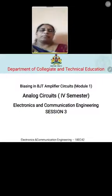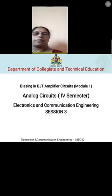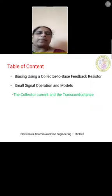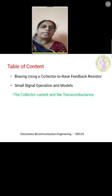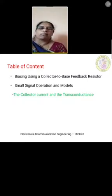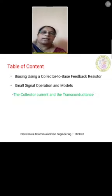Welcome to session 3 of biasing in BJT amplifier circuits. In this session we are going to discuss another type of biasing circuit, that is biasing using collector-to-base feedback resistor, and also small signal operation and models. In that we are going to discuss the collector current and the transconductance.